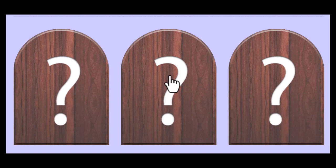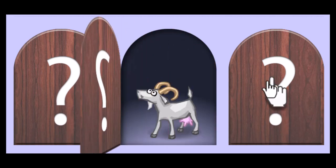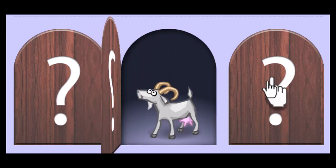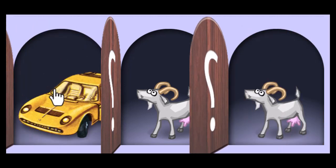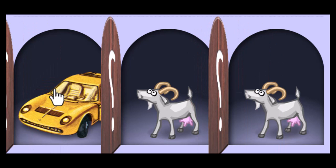Let's use the die. I've got to pick door number three. The coin tells me to switch. I picked door number three and switched to door number one. The car was actually there! So when I switched, I won one time.